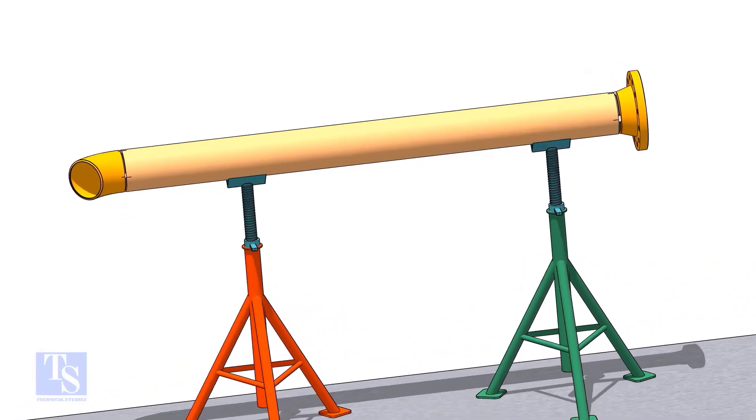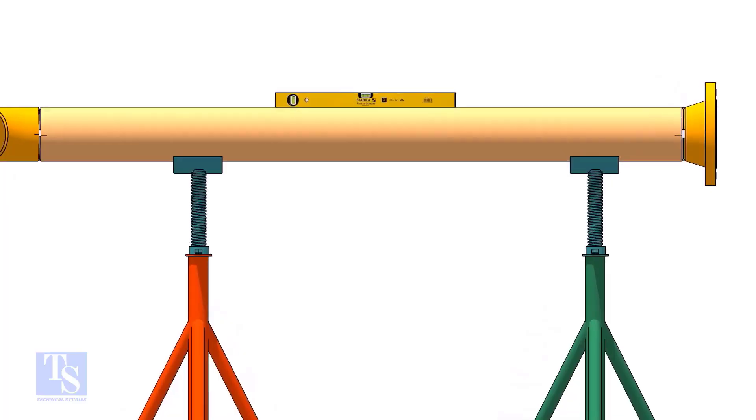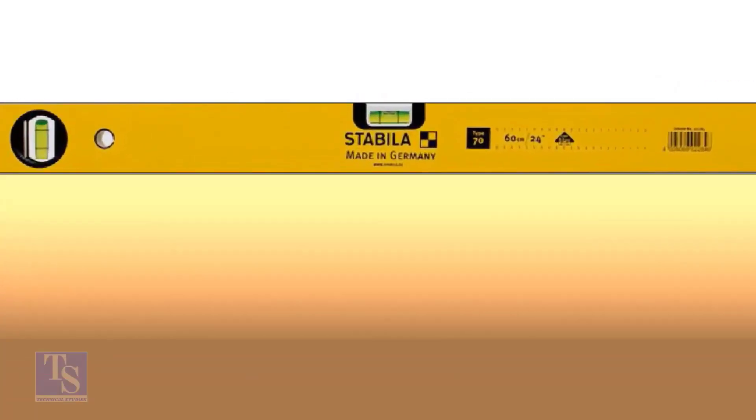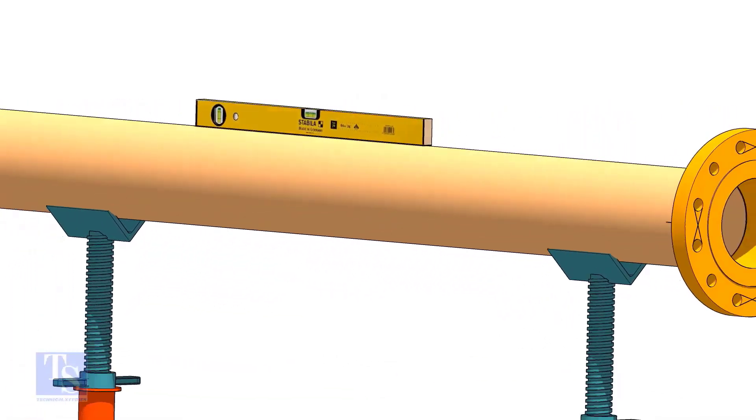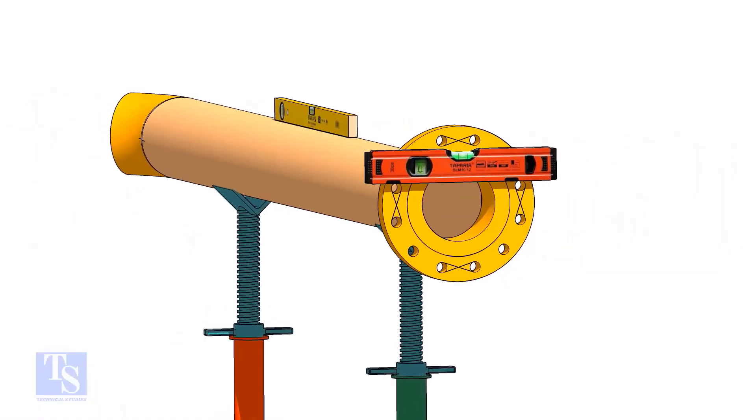Now let's fit up the flange. First, correct the level of the pipe. Then, correct the level of the flange that is already installed.